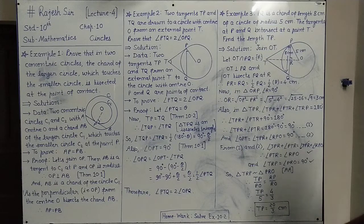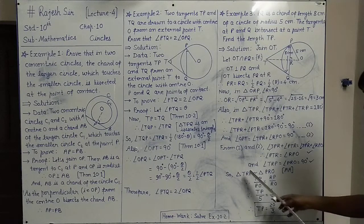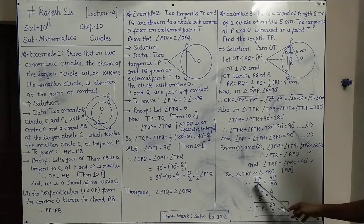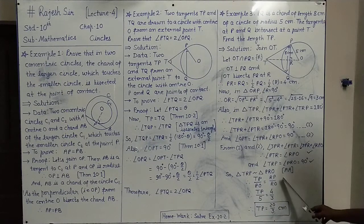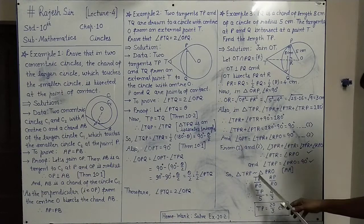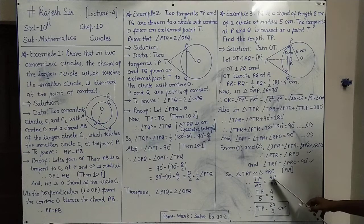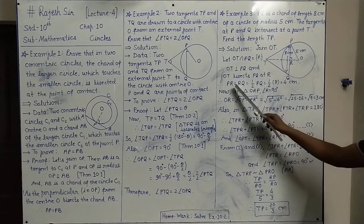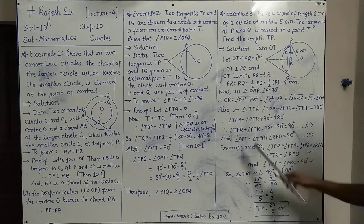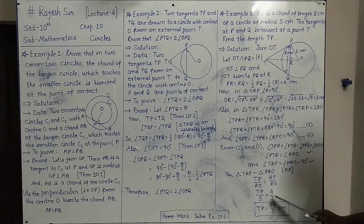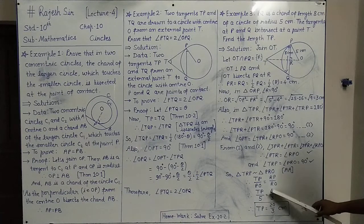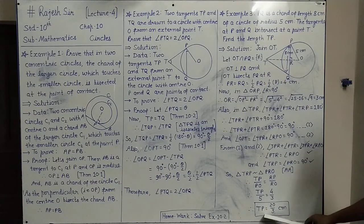Since the triangles are similar, their sides are in proportion: TP upon PO equals RP upon RO. Placing values: TP upon 5 equals 4 upon 3. Therefore TP equals (5 × 4) upon 3 equals 20/3 cm. So the length of TP is 20/3 centimeters.